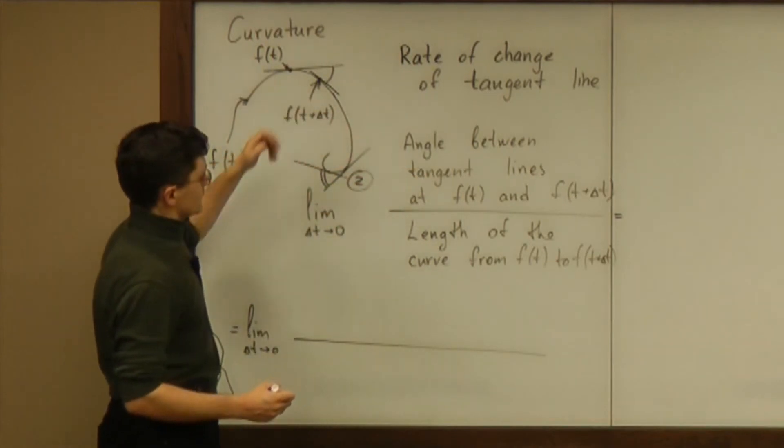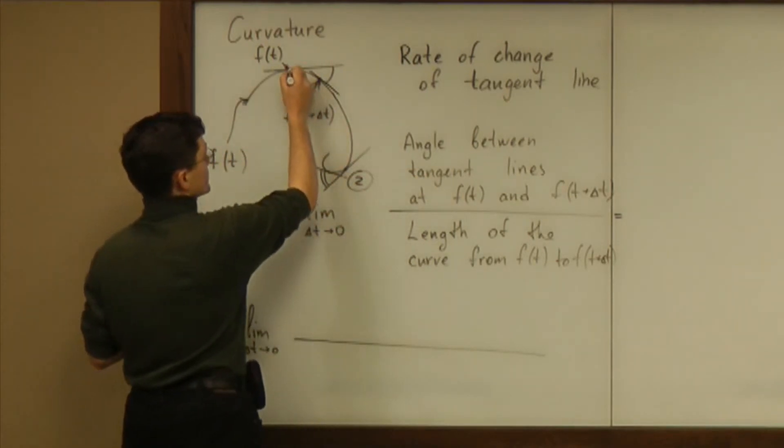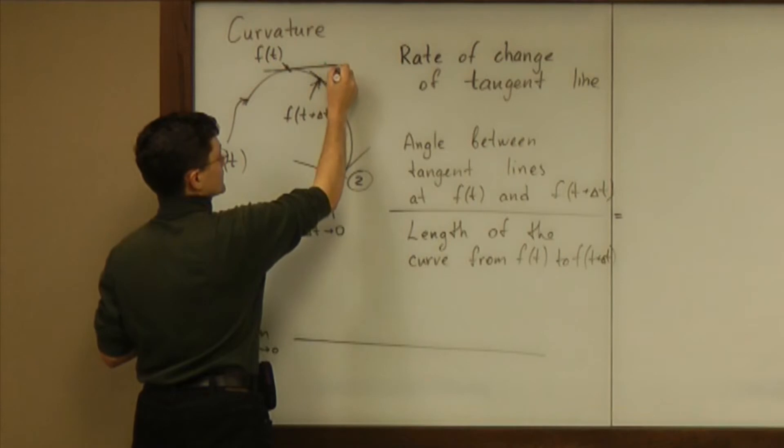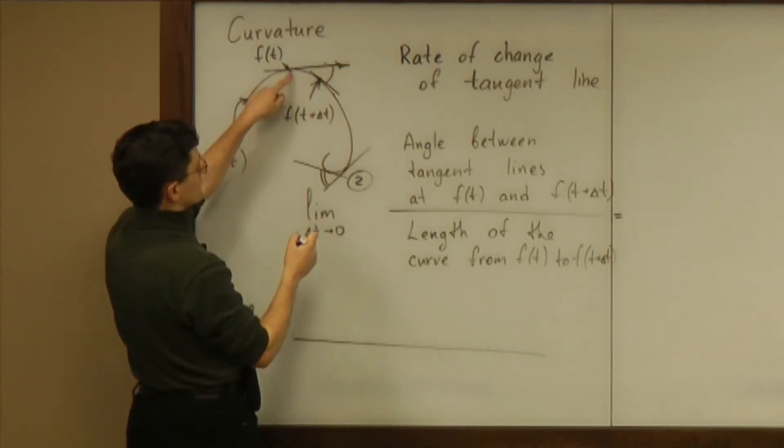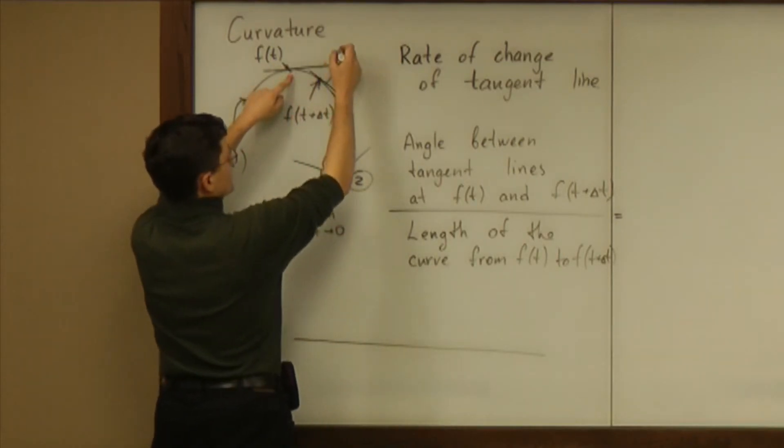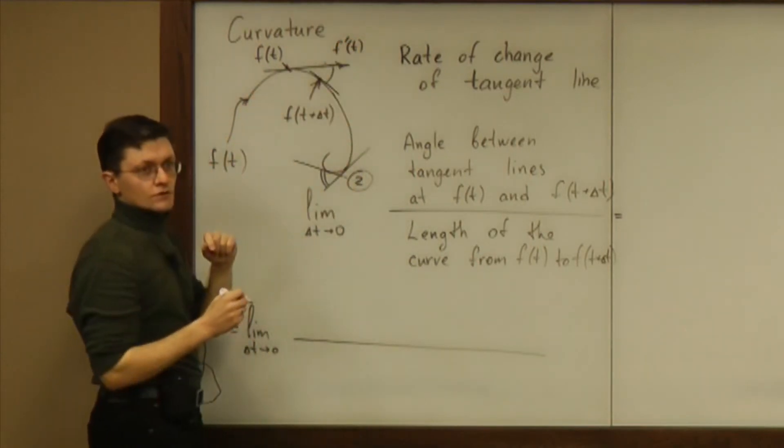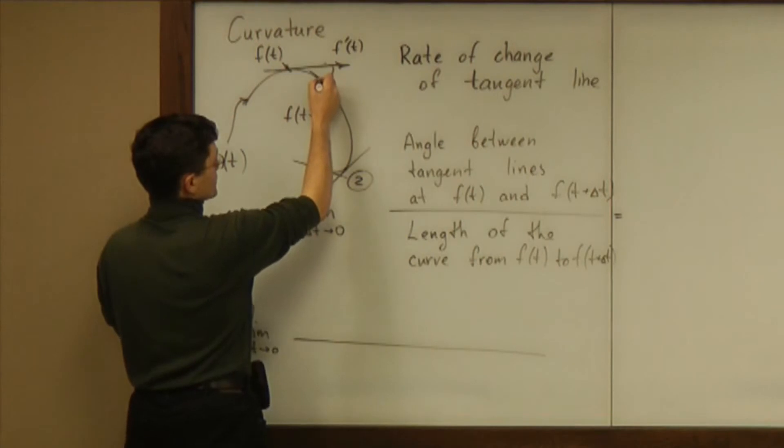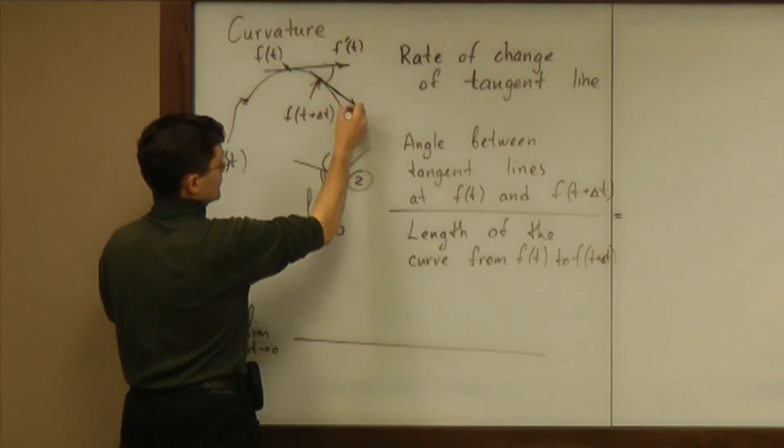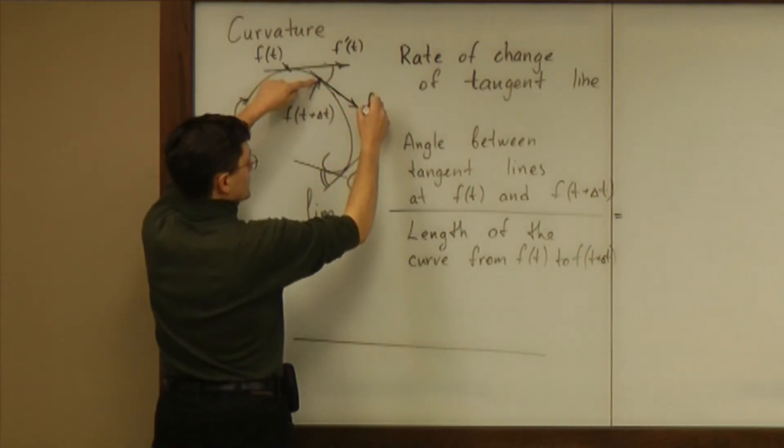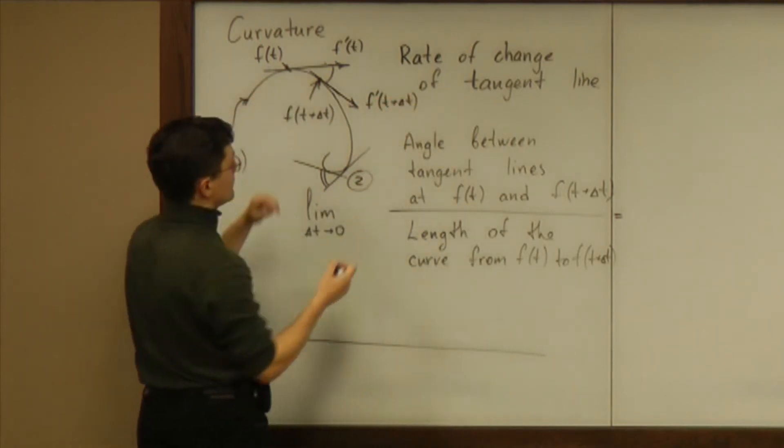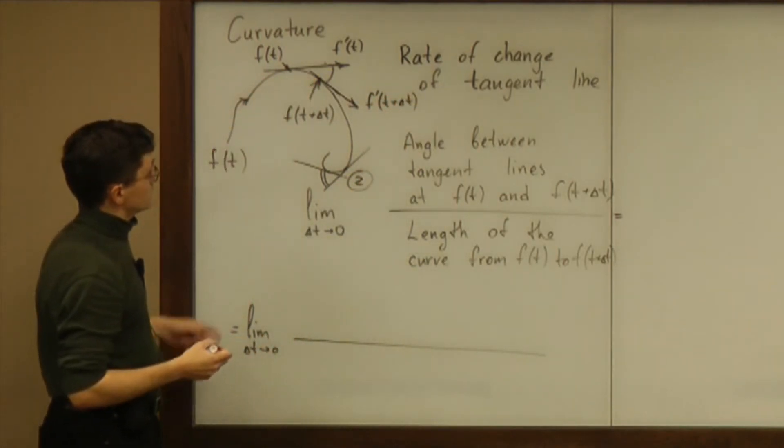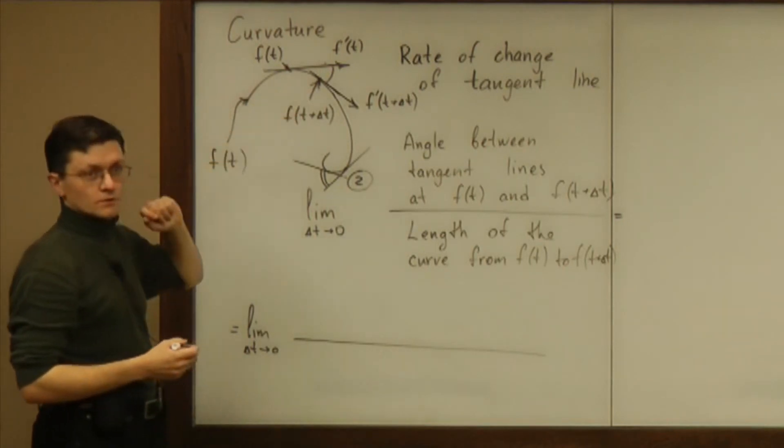So the angle between tangent lines is actually equal to the angle between velocity vectors. So we can look at the velocity vector at this point and that vector is f prime of t, just the derivative of the position. We can look at the tangent vector at that point and that vector is f prime of t plus delta t.